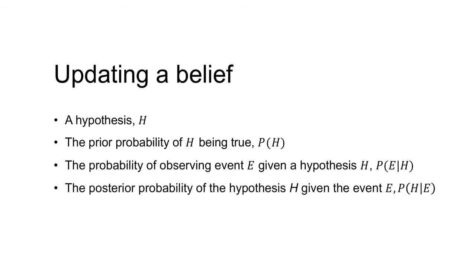Third, the probability of observing event E given a hypothesis H, P(E|H) — for example, the coin shows a head has a probability of 0.5 given that the coin is fair. And finally, the posterior probability of the belief H given the event E — the probability of the hypothesis given the event. For example, we would have an updated probability in our hypothesis that the coin is fair based on the coin showing a head.